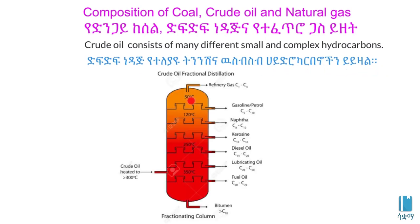Crude oil is composed of hydrocarbons. For example, gasoline or petrol and naphtha are hydrocarbons derived from crude oil.